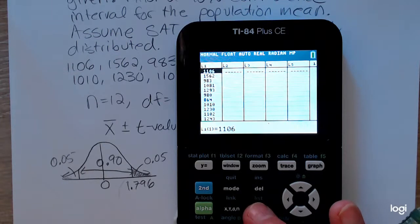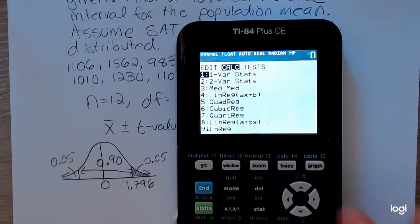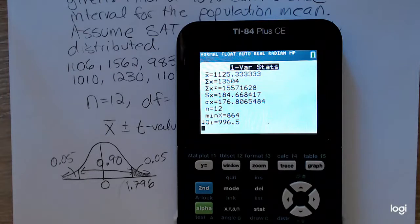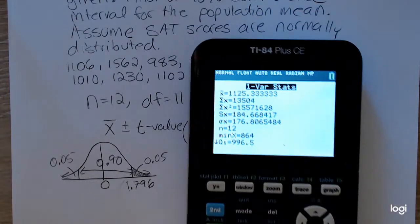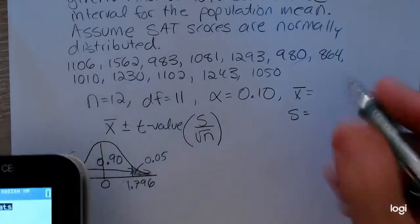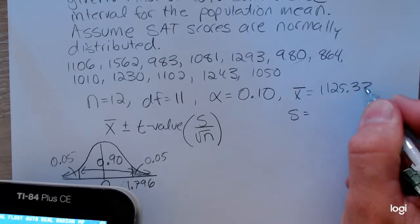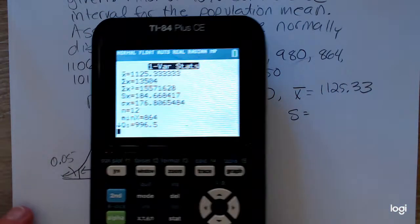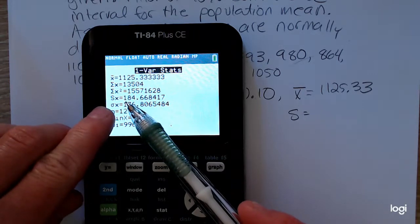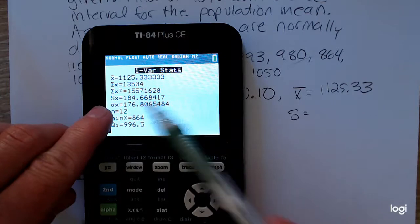So I put all 12 values in the first list. And to get the sample mean and sample standard deviation, I'm going to right arrow over to calc, select option 1. And I have my data in list 1, and enter at calculate. So I have a sample mean of 1,125.33. And that sample standard deviation will be this value here, this S sub X. So that's 184.67.